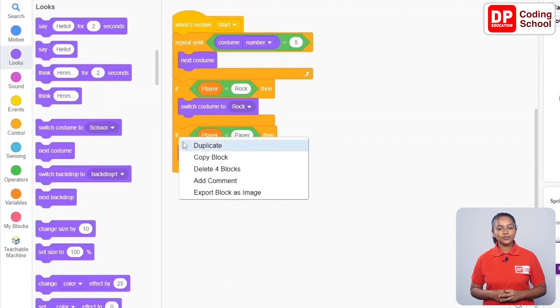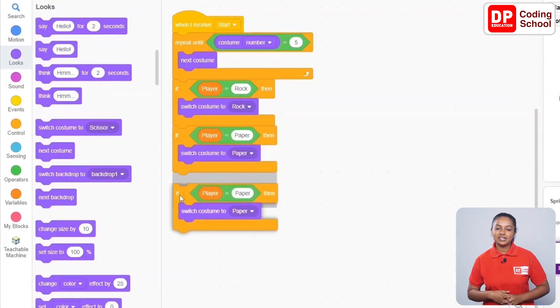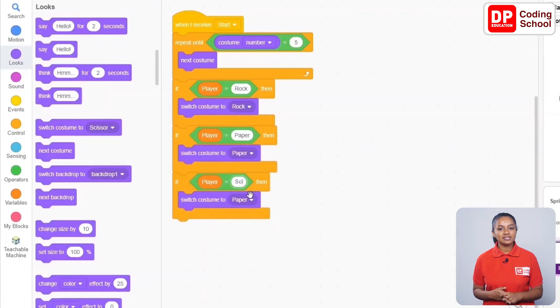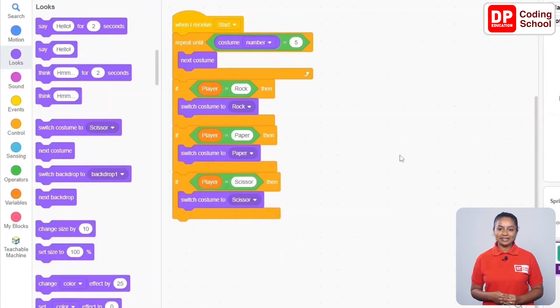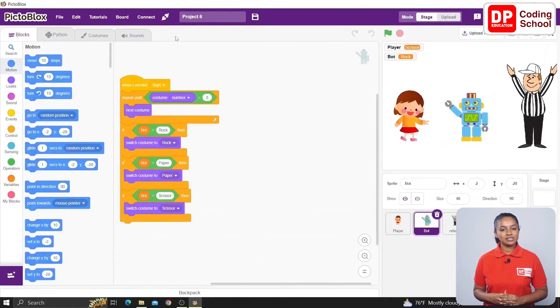Now let's duplicate this if code block once again. Let's change the player's value here to scissors and give scissors here. Okay, now we have completely created the rock, paper, and scissors game. Now we have to save this design.